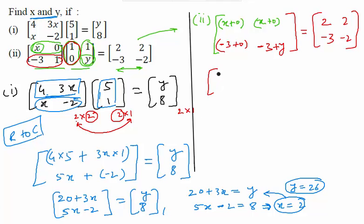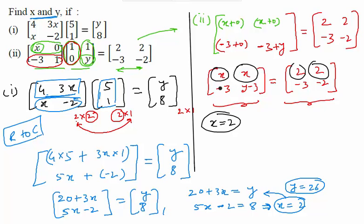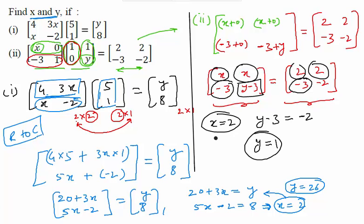Simplifying the left-hand side matrix gives elements: 0, x, minus 3, and y minus 3. This must equal the right-hand side matrix: 2, 2, minus 3, minus 2. Since two matrices are equal, their corresponding elements must be equal. From the second element, x equals 2. The third elements both give minus 3 equals minus 3, which yields no new information. From the fourth element, y minus 3 equals minus 2, which gives y equals 1. So we have found the values of x and y for part 2.